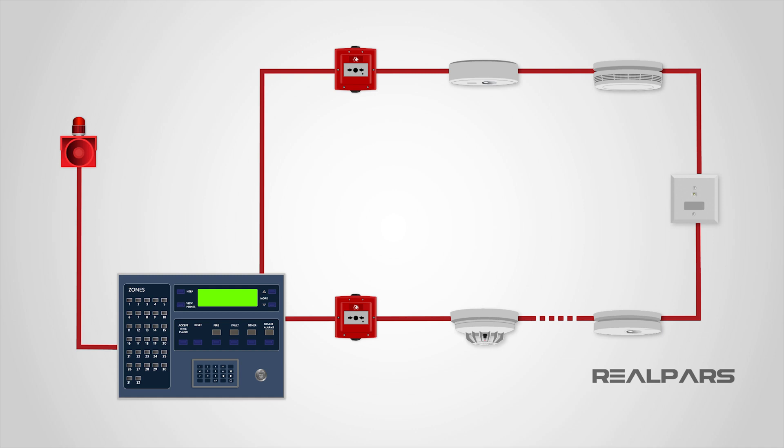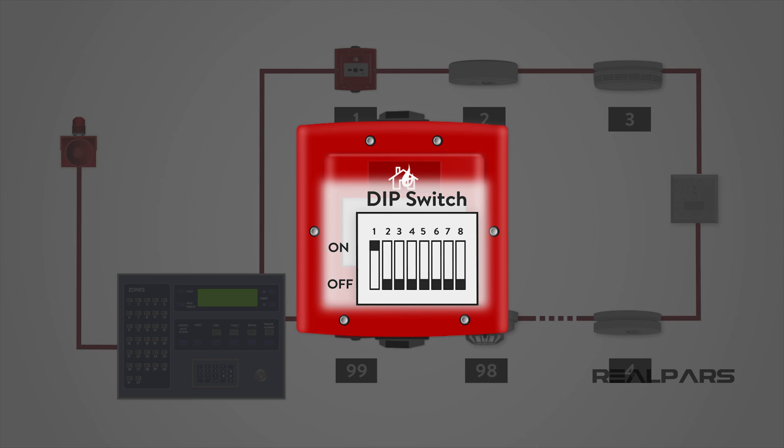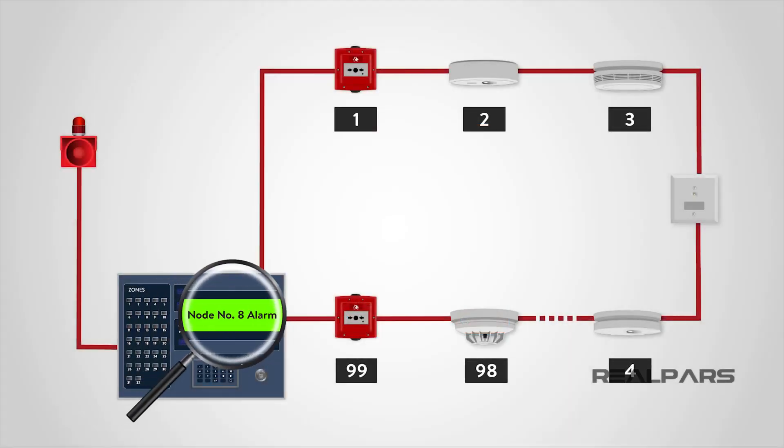The detection principle of an addressable system is the same as a conventional system, except that each detector is given a set address, usually by means of a dip switch, and the control panel can then determine exactly which detector or call point has initiated the alarm.